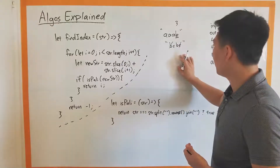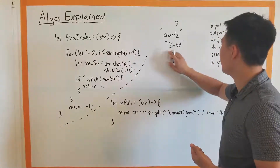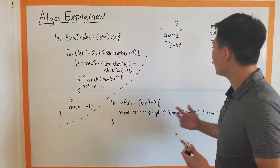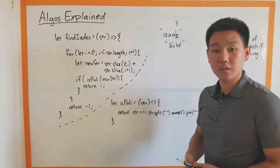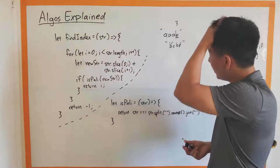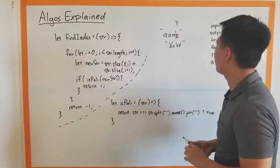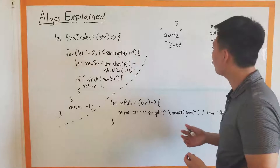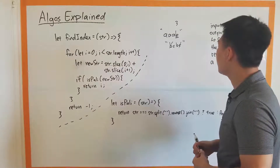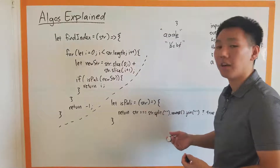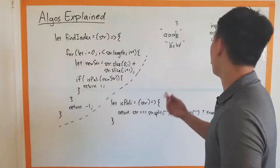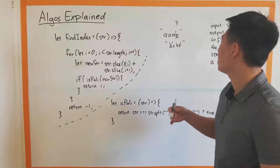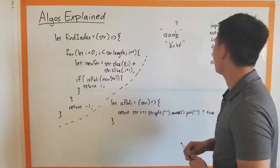It doesn't matter — our code is probably going to give us the first one. And we're not asking you to mutate the string or anything. We're just asking: give us the index, so that we're checking — do you understand what a palindrome is and do you know how to take that index out and check if it's truly a palindrome or not.